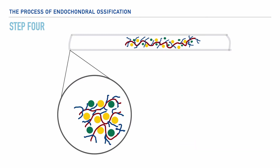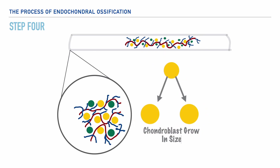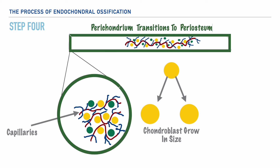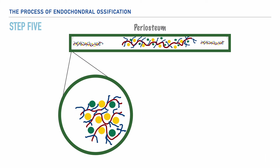Over the course of time, the chondrocytes in the cartilaginous model grow in size, and soon after, capillaries begin to penetrate this area. Through this process, we'll see the transformation of the perichondrium into the periosteum, which is the outer covering of bone tissue. We'll call this process and this area in the center of our model the primary ossification center, which simply represents the first step or the beginning process of bone growth.